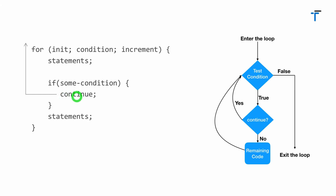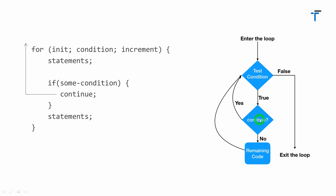When the continue statement executes inside a loop, all the statements below continue — whatever part you place inside the loop below the continue statement — will be skipped and won't execute. Instead, control jumps to the beginning of the loop and starts the next iteration. As long as the loop condition is true, the body executes; when continue runs, the remaining code is bypassed and control goes back to the top of the loop for the next round.